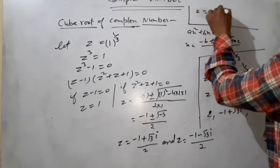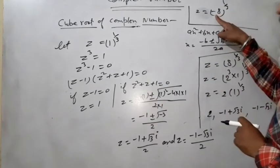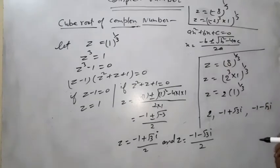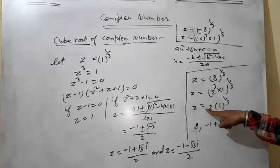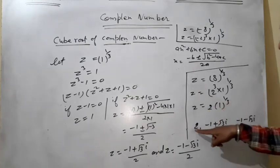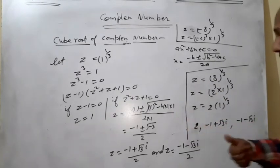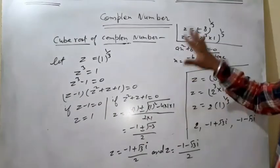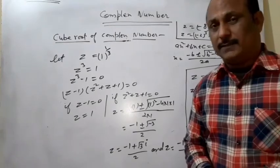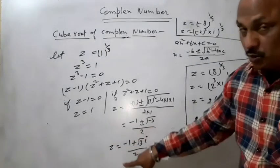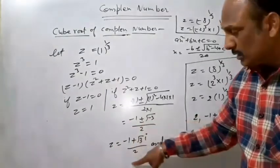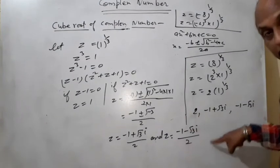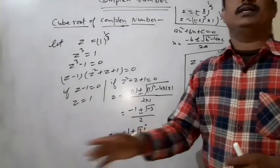Similarly, if we want to find the cube root of -8, we write z = (-8)^(1/3) = (-2³ × 1)^(1/3) = -2 × (cube root of 1). So all values will have their signs changed — they become negative. This is how we calculate the cube root of -8.